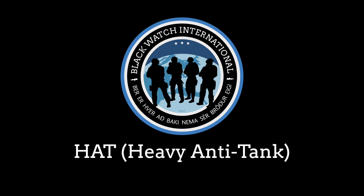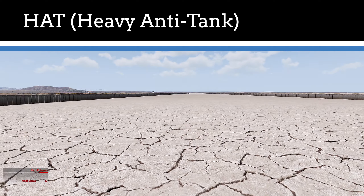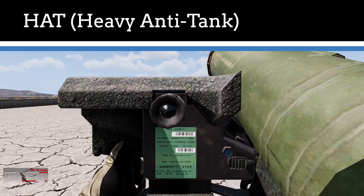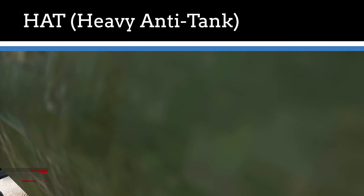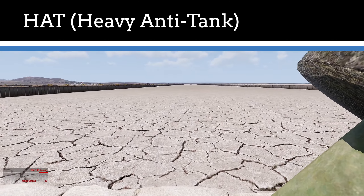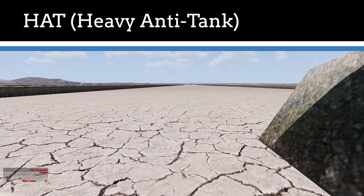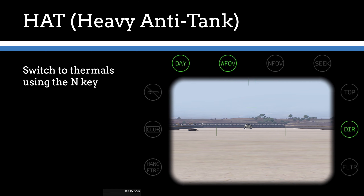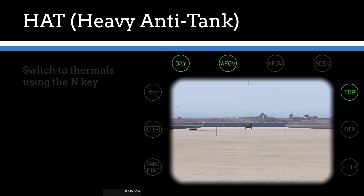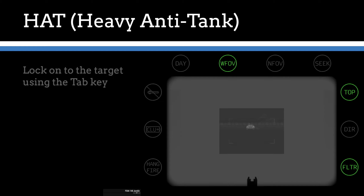Heavy anti-tank. When a heavier armor threat is expected or longer range engagements are necessary, a heavy anti-tank launcher may be utilized. Like medium anti-tank launchers, these are crew-served weapons. Currently, Blackwatch primarily uses the FGM-148 Javelin for HAT. To fire this launcher, aim towards your target. In order to achieve a lock, switch to a thermal imaging mode by pressing the N key. You can begin the locking procedure by holding the Tab key. Note that this will not occur if the launcher has not already been loaded.